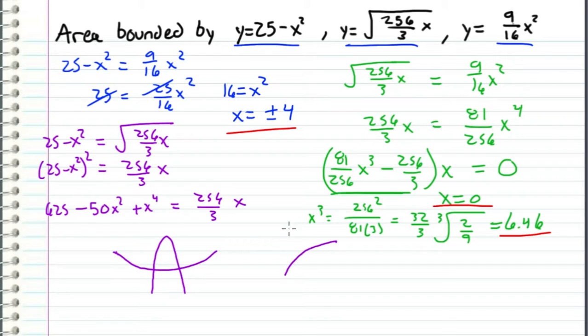Since we know that a square root function always increases, then we know the square root function has to intersect with that downward-facing parabola first. And since we already determined that this intersection point of the two parabolas is 4 and negative 4, then we can reason that the intersection that will satisfy this equation has to be less than 4 because the square root function is increasing and must intersect with this downward parabola first.